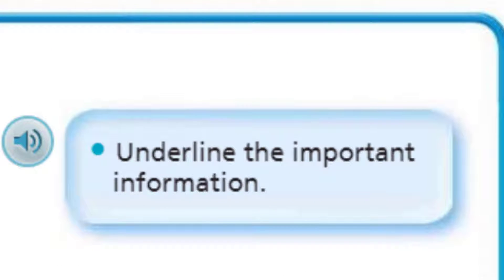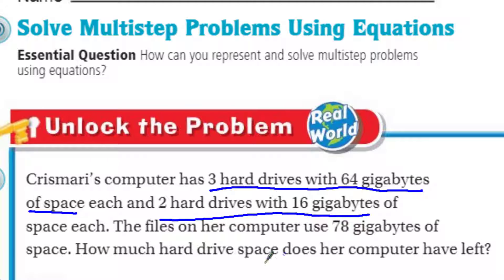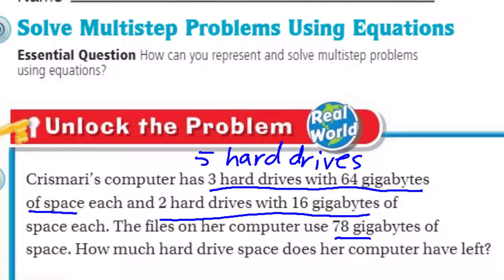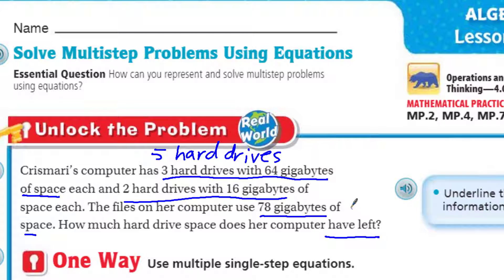It says underline the important information. So it looks like there's a lot of important information here. First, it seems important that Chris Mari's computer has three hard drives with 64 gigabytes of space, and two hard drives with 16 gigabytes of space. So both of these seem important because she's got a total of five hard drives altogether. Some hard drives have more gigabytes — 64 gigabytes is a lot better than 16. The files on her computer use 78 gigabytes of space.